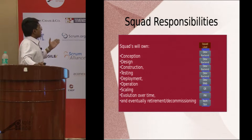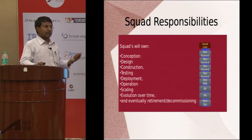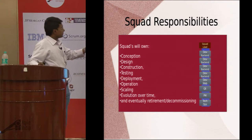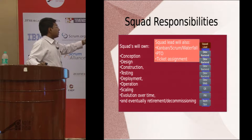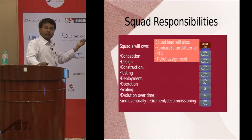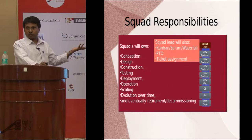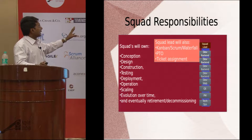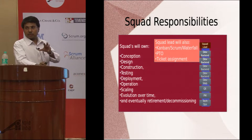The squad owns the conception, design, construction, testing, deployment, operation, and scaling — the full top to bottom of software delivery. The squad lead chooses what particular model to follow, whether scrum, Kanban, or waterfall. The squad lead also handles management activities such as PTO and ticket assignment. This model gives maximum independence to the team, and the team owns the whole product.